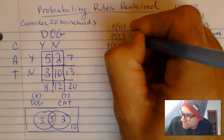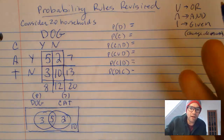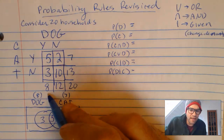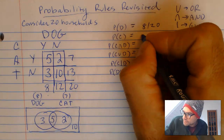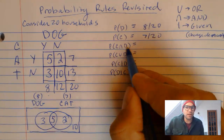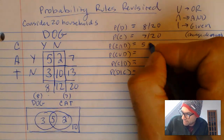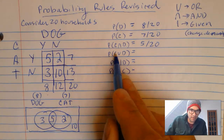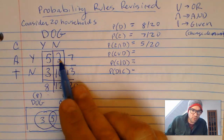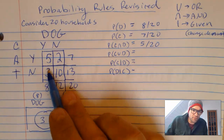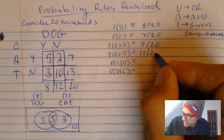Let's figure out some probabilities. The probability a house has a dog: 8 out of 20. The probability a house has a cat: 7 out of 20. The probability a house has a cat and a dog — that's the overlap — 5 out of 20. The probability of a cat or a dog: that includes everyone with at least one, so 2 plus 5 plus 3 equals 10 out of 20. Half the houses have a cat or a dog.